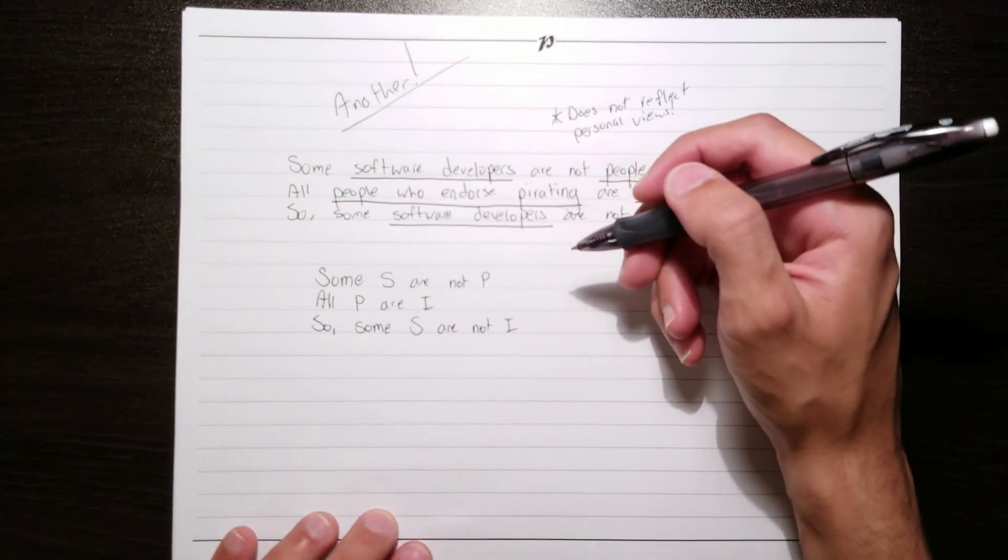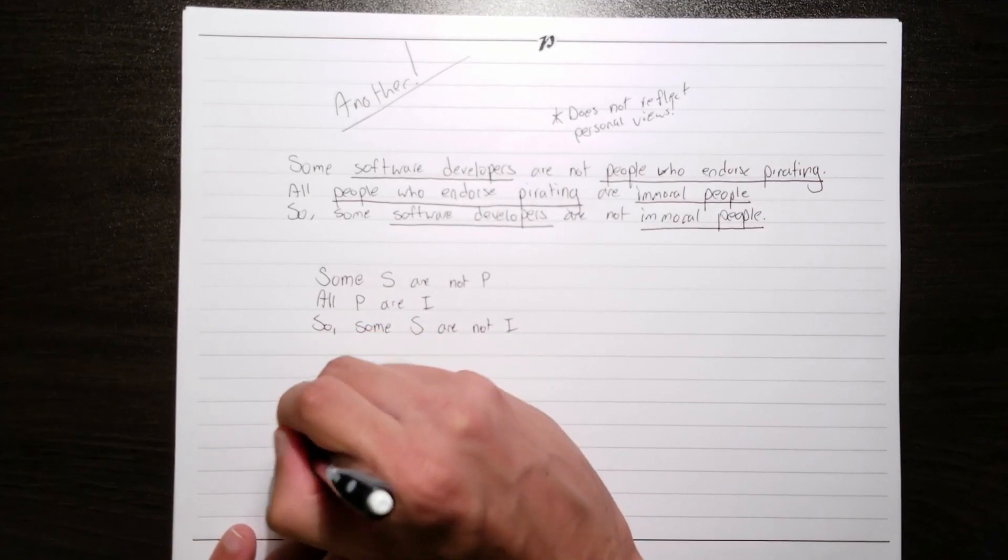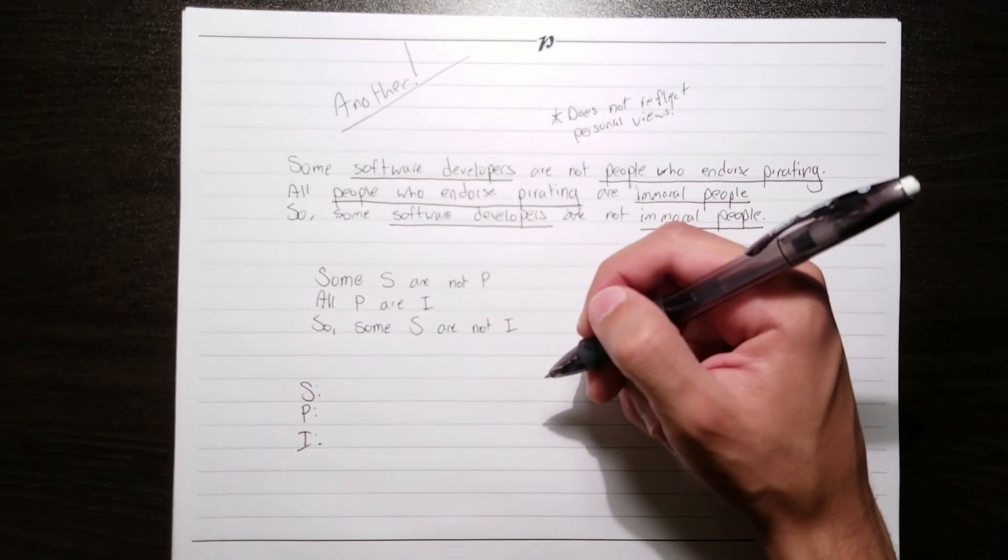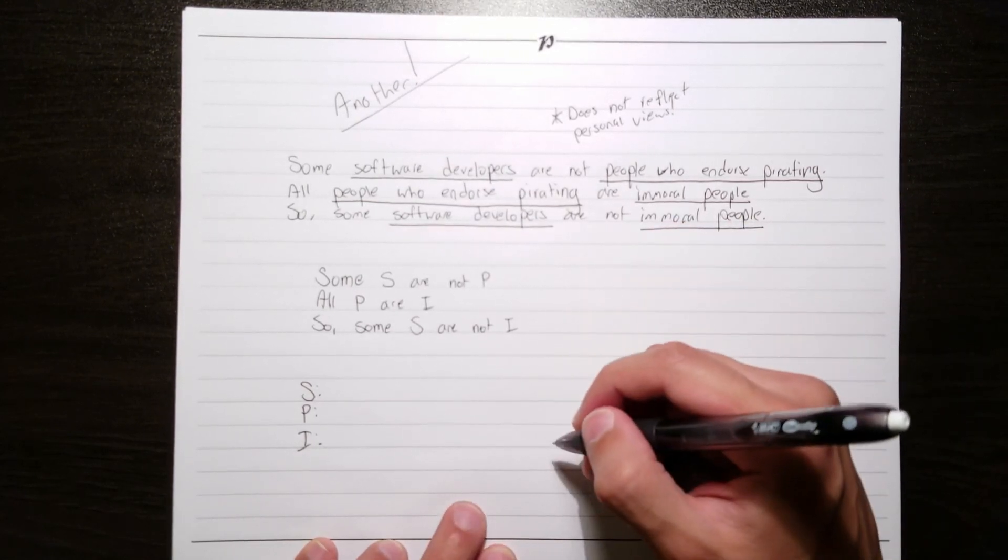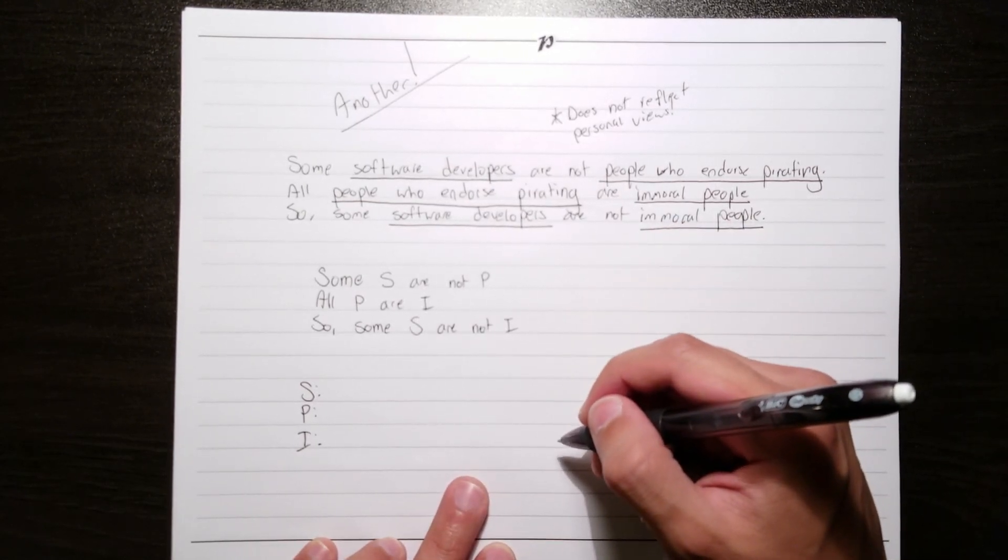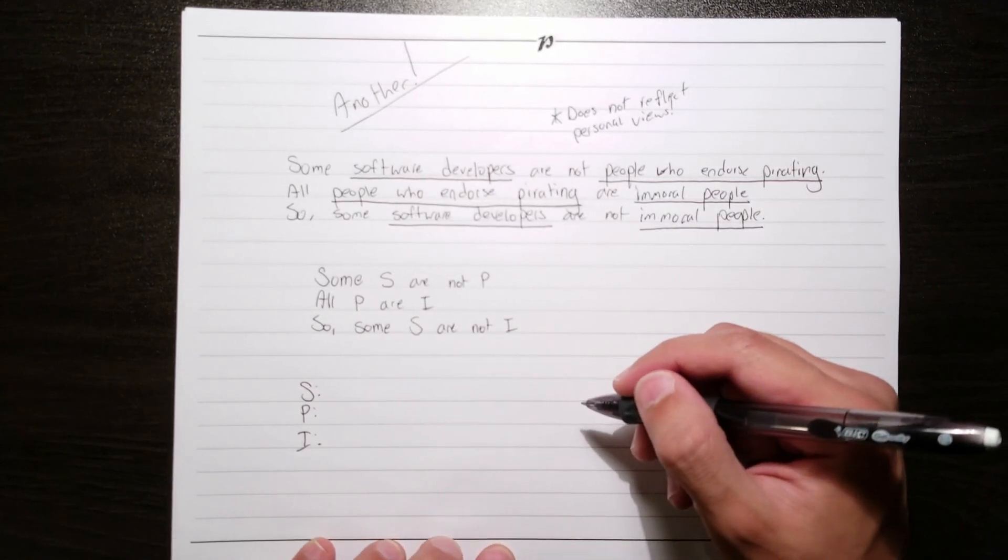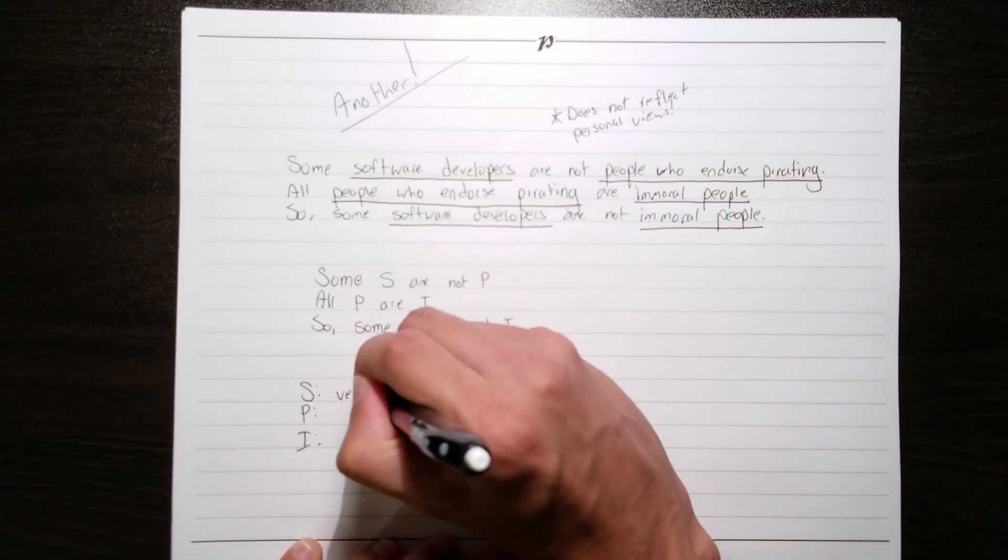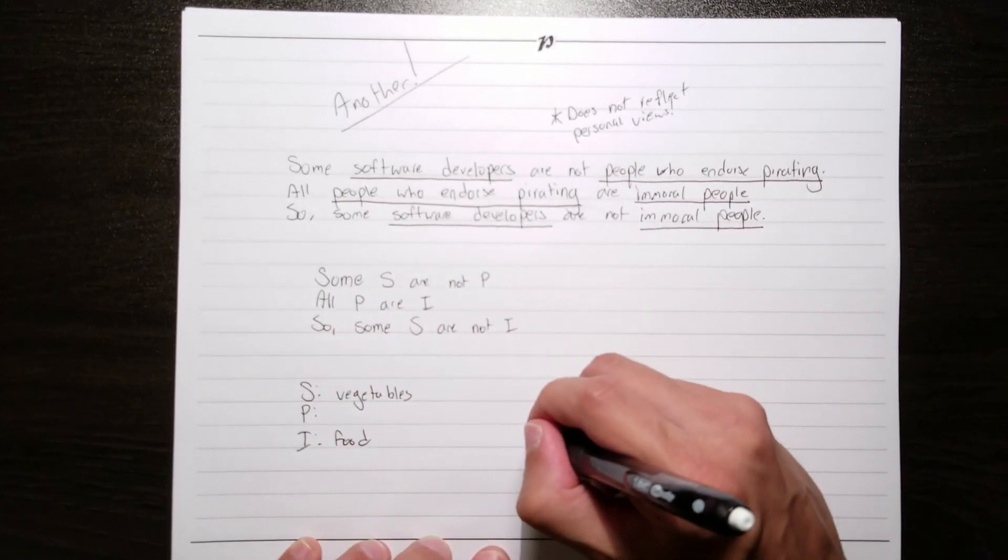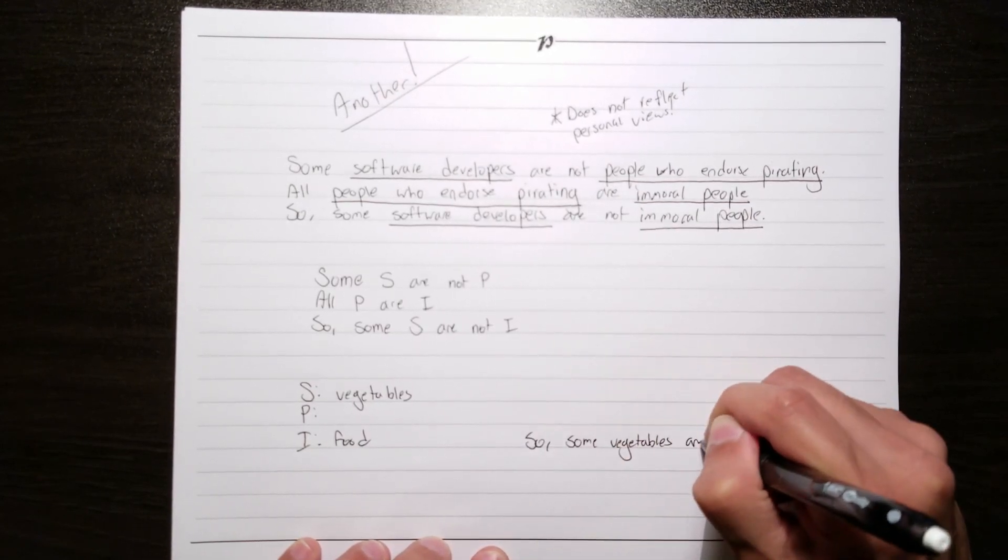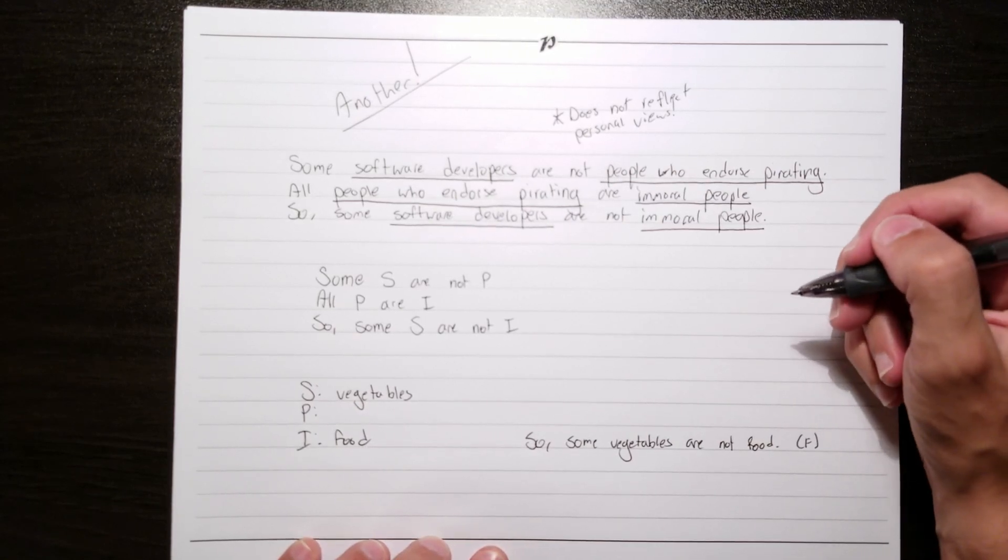And now we're going to go ahead and try to fill in new content to make the premises true and the conclusion false, starting, of course, with the conclusion. And we're going to go ahead and stick to filling in food as the content, because I find it easy to think about, and I like food. So let's go ahead and try to make some s are not i false. I've got just the thing. We're going to go ahead and make s vegetables and i food. And so our conclusion reads, so some vegetables are not food. This is certainly false, although I'm sure there are some nine-year-olds out there who would disagree with me.